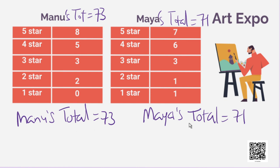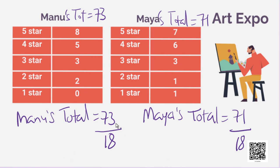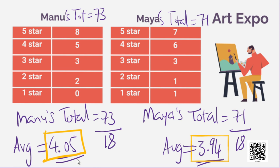Now, we have Manu's total as 73 and Maya's total as 71. We have to divide by the number of visitors who shared reviews. Adding Manu's rating counts: 8 plus 5 is 13, 13 plus 3 is 16, 16 plus 2 is 18. Maya's review count is also 18. If we divide, Manu got a total rating of 4.05 and Maya got a total rating of 3.94. So, we can say that Manu got better ratings.